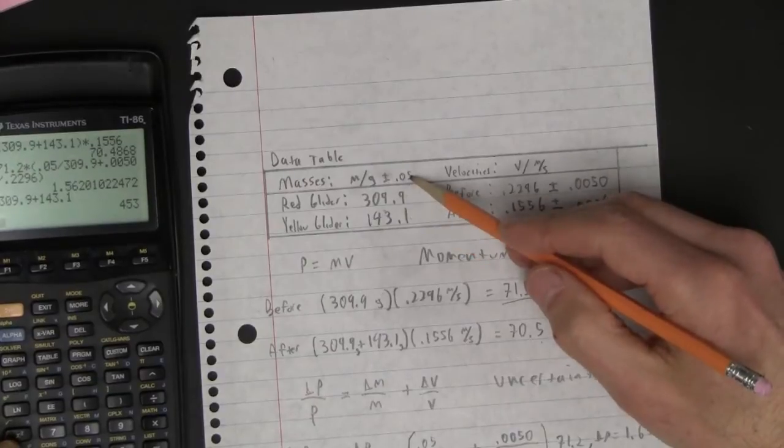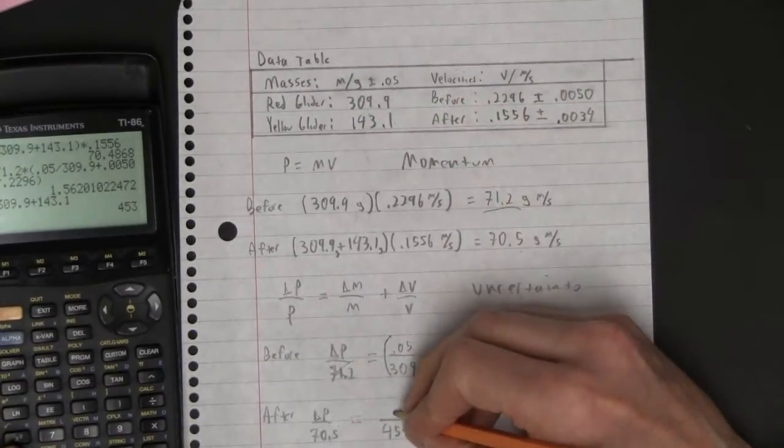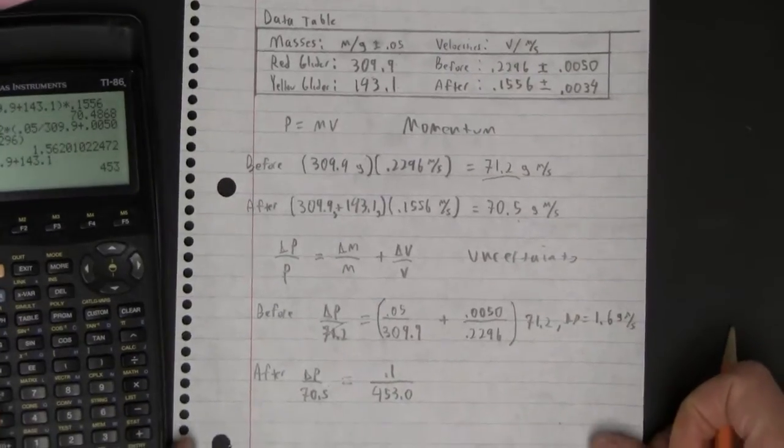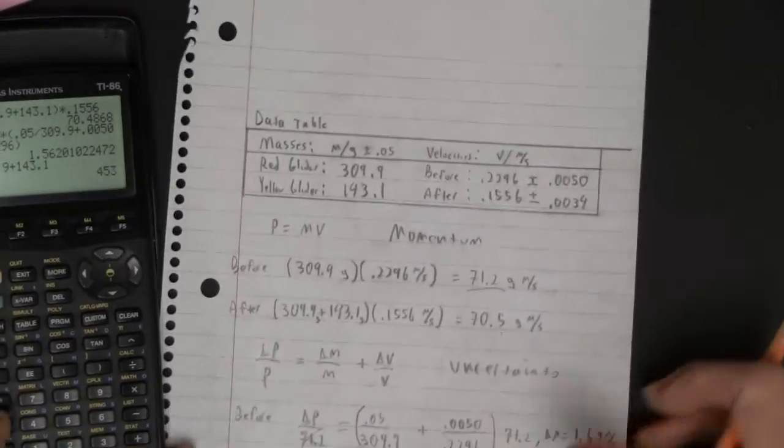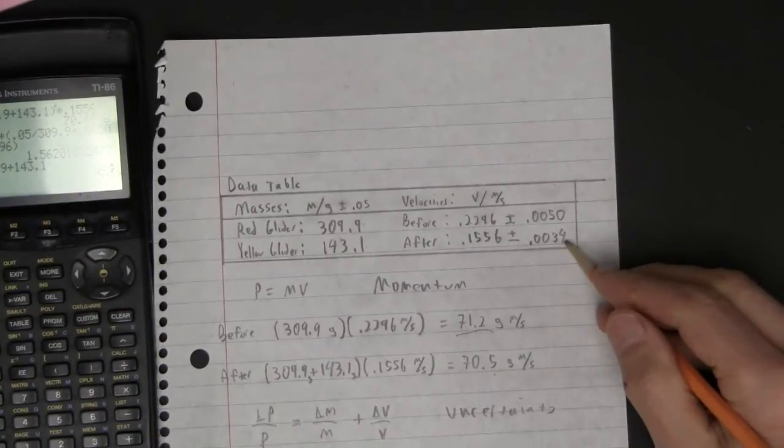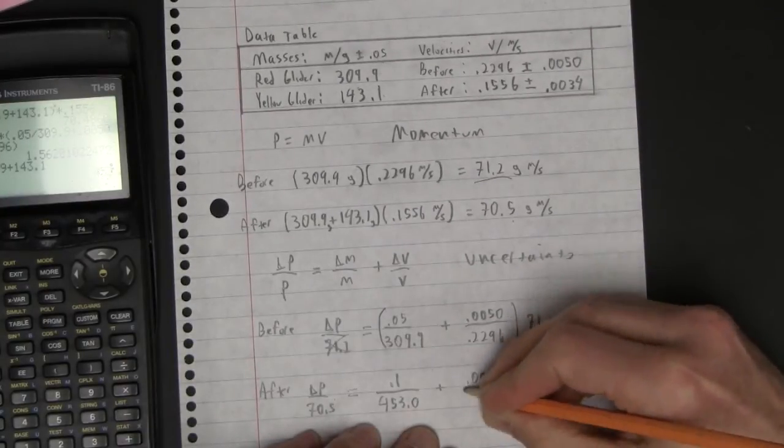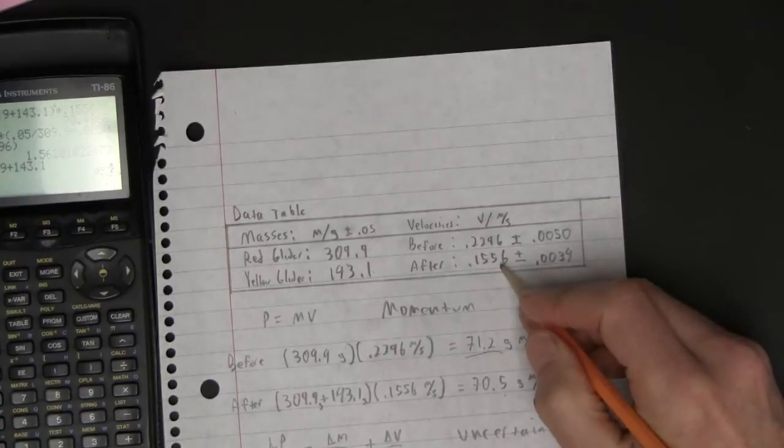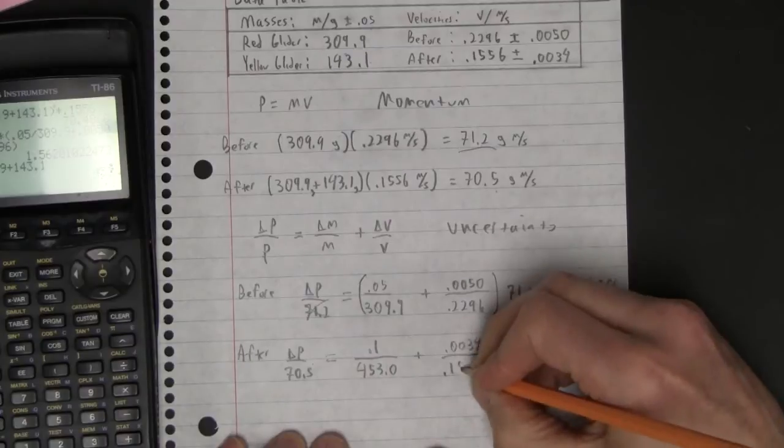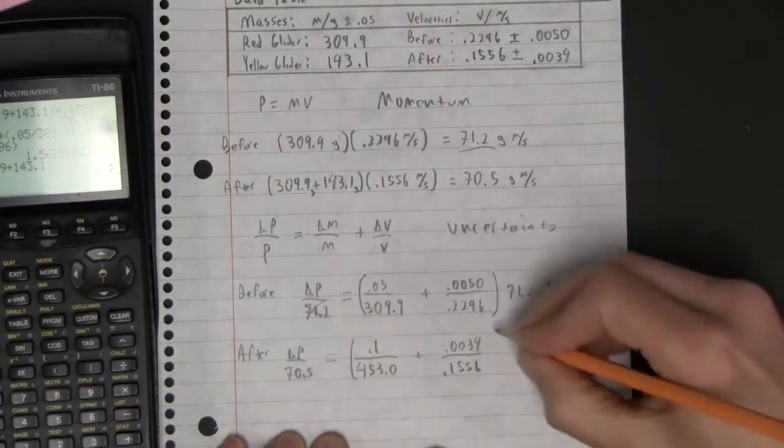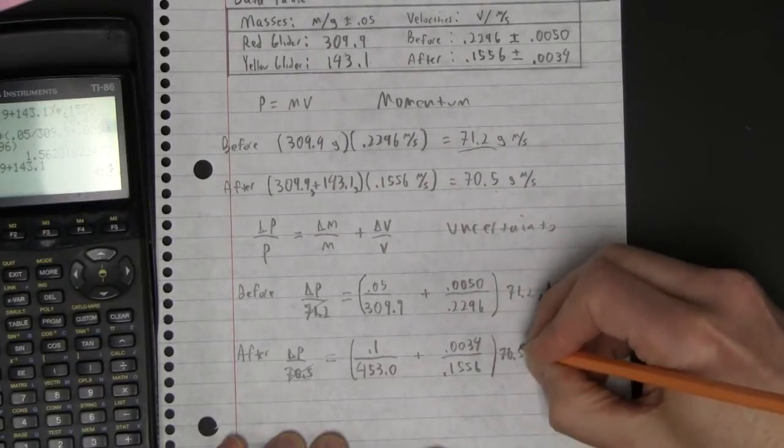And then the uncertainty is going to be, I'm adding this to this, so the uncertainty will be actually twice 0.05 or 0.1. Not a big deal if you missed that, but there's a little technical detail. 0.1 over that. And then the uncertainty was 0.0034. And of course, we're going to do the same thing. I'm just going to bring this guy out there, 70.5. All right, so my uncertainty is, let's do it on the calculator.